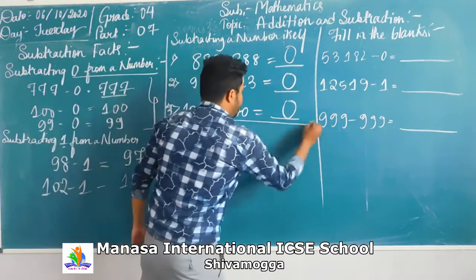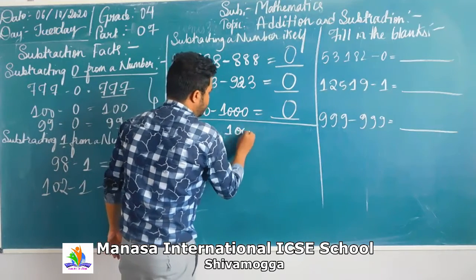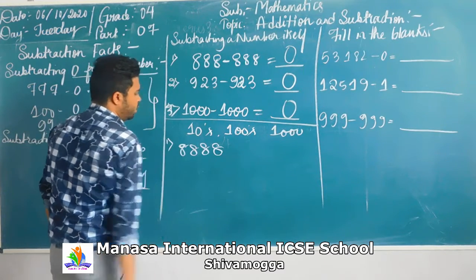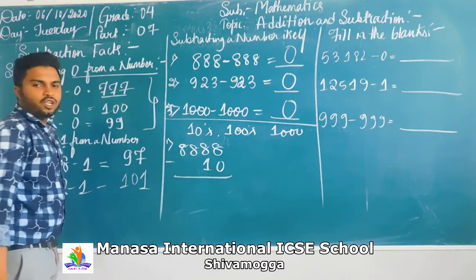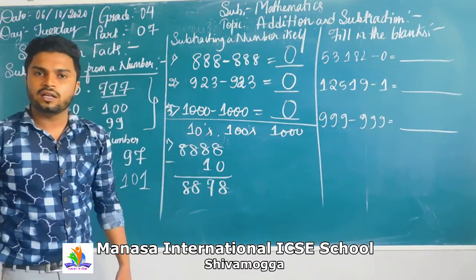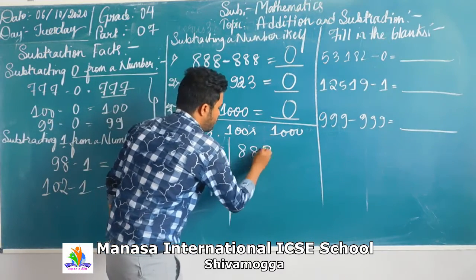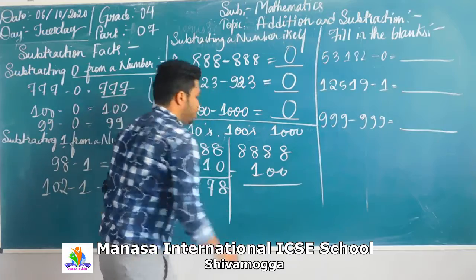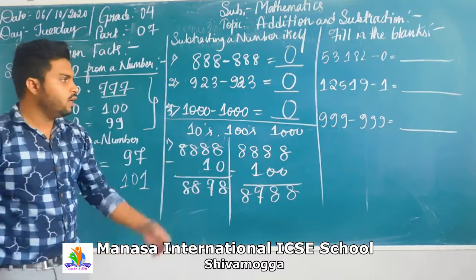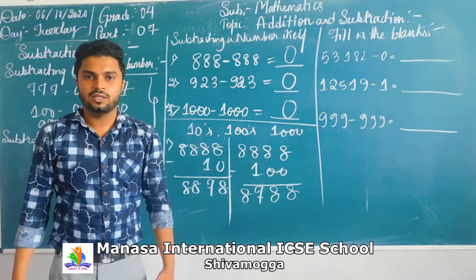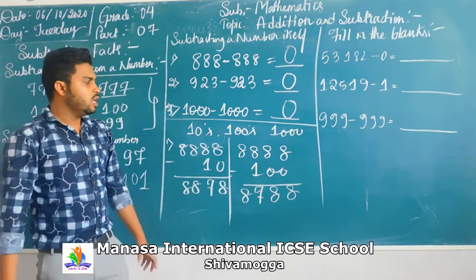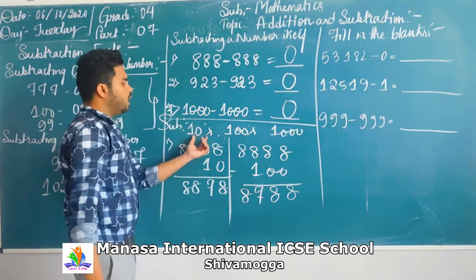Now we will look at subtracting tens, hundreds, and thousands. For example, take 8888. Once you subtract ten, the tens place decreases by one, giving you 8878. When you subtract a hundred, the hundreds digit changes — you get 8788. This is subtraction with respect to tens, hundreds, and thousands.